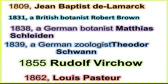In 1838, German botanist Matthias Schleiden found that all plant tissues are composed of individual cells that are fully independent. One year later, in 1839, German zoologist Theodor Schwann reported the same for animal tissues — that they too are made of individual cells. Together, Schleiden and Schwann introduced the cell theory.